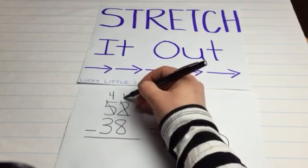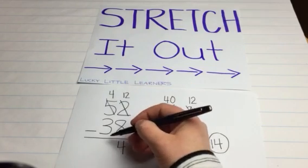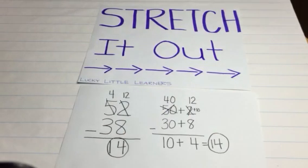2 is now 12. 12 minus 8 is 4. And 4 minus 3 is 1. Our answer is 14.